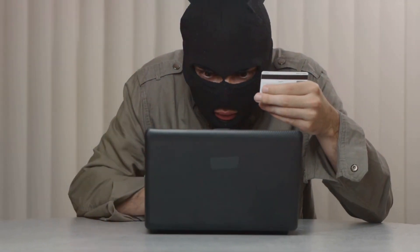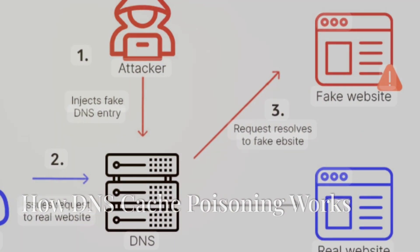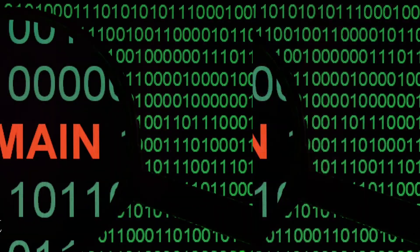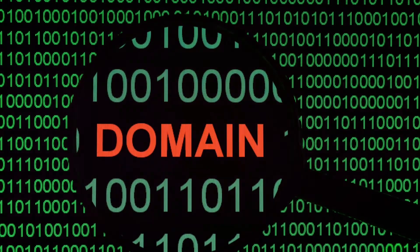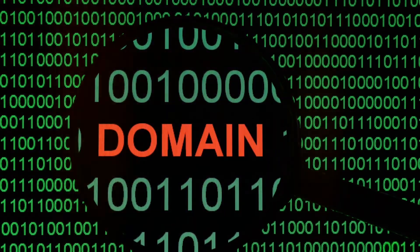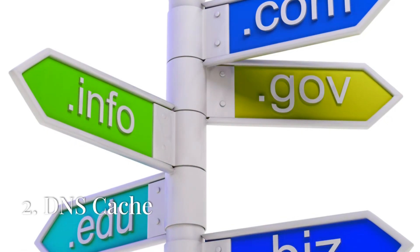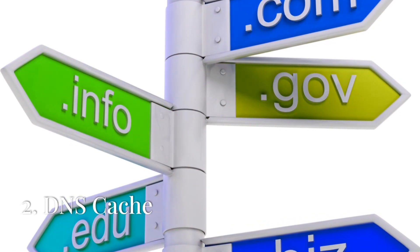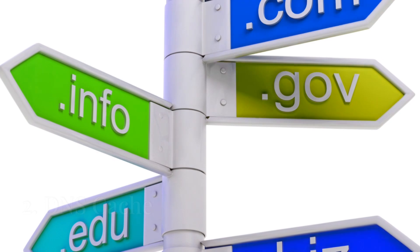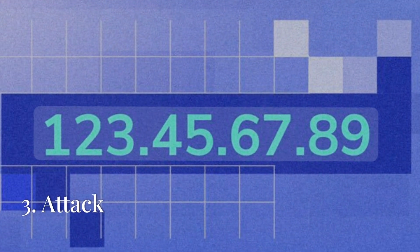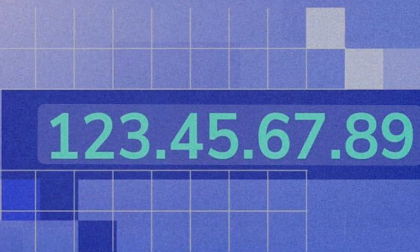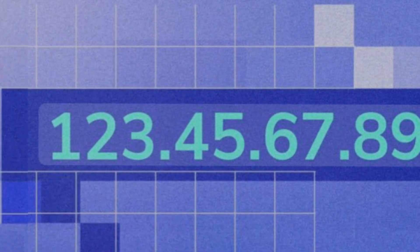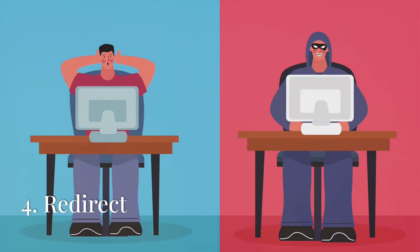Here's how DNS cache poisoning works. When you visit a website, your browser sends a request to a DNS server to resolve the domain name into an IP address. The DNS server stores the result temporarily in its cache to speed up future lookups. In a DNS cache poisoning attack, the attacker tricks the DNS server into accepting a false IP address for a domain, and when you or someone else tries to visit that site, the poisoned cache directs them to the attacker's website.